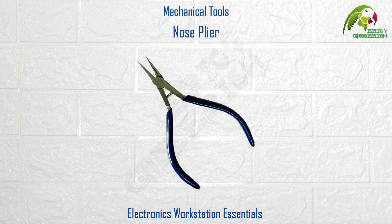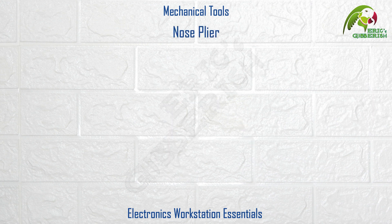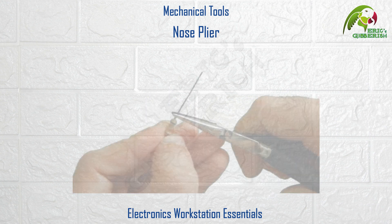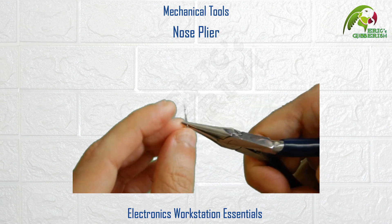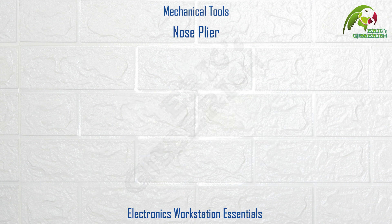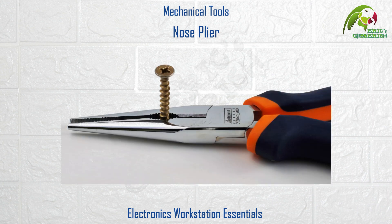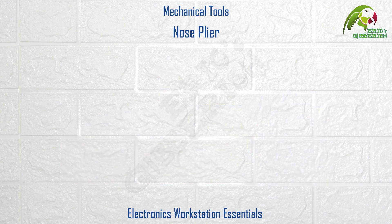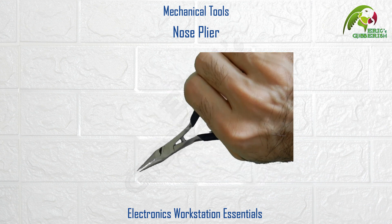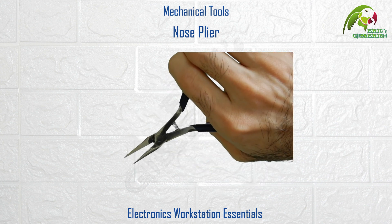Nose plier. A very handy tool particularly useful for gripping or holding various components and devices, and bending the leads of lighter components. It can be considered as a heavy duty version of a tweezer, and due to its shape and size makes it a very useful tool especially for constrained spaces and difficult to access areas. I would recommend one with a spring of some kind fitted between its handles, which facilitates easier use.